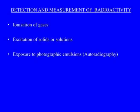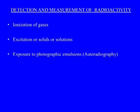In this lecture, we are going to discuss the detection and measurement of radioactivity. The three commonly used methods of detecting and quantifying radioactivity are based upon: one, ionization of gases; two, excitation of solids or solutions; and three, exposure to photographic emulsion, which we call autoradiography.